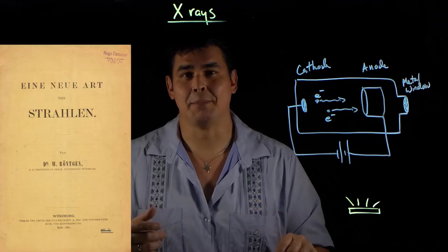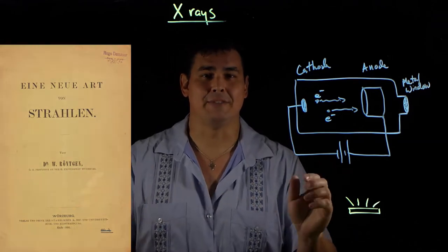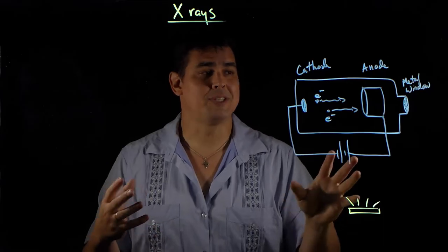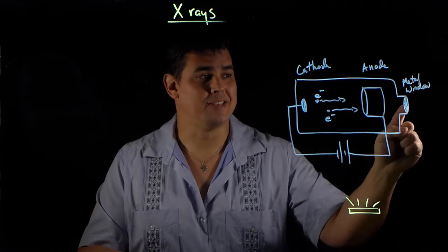So he publishes his paper in December of 1895, and he becomes instantly famous because people realize that this is going to be a really huge thing, especially for medicine. So let's look at what's actually happening here. So the key to all of this is this metal window.